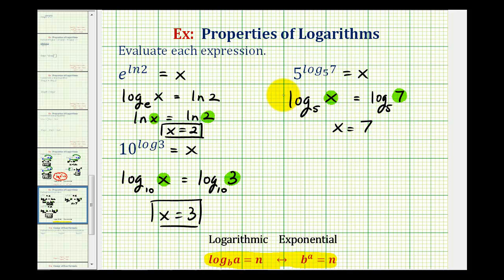Notice in each of these three cases, these expressions simplify to just the number part of the log in the exponent. Five raised to the power of log base five of seven simplified to seven. Ten raised to the power of common log three simplified to three.